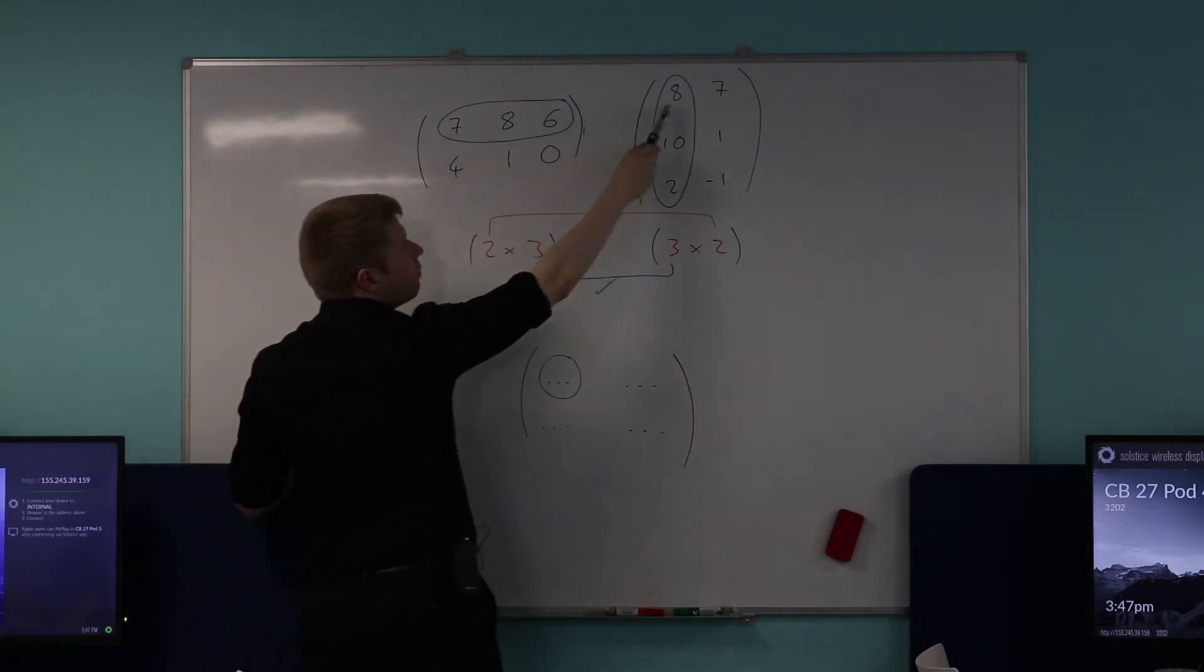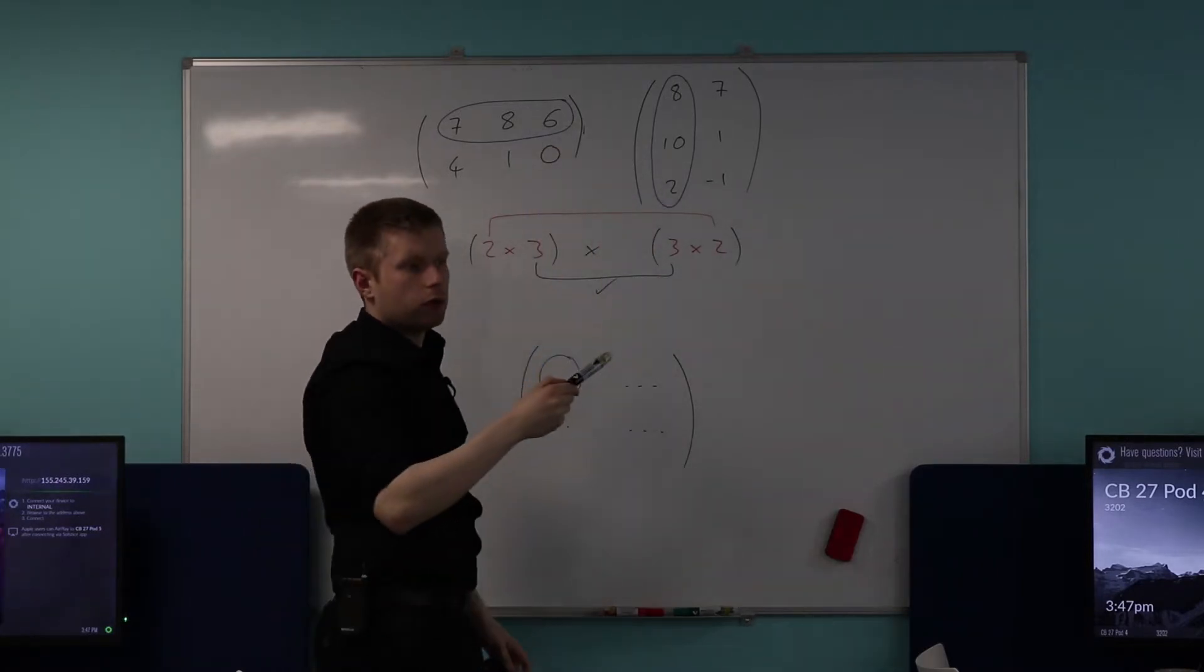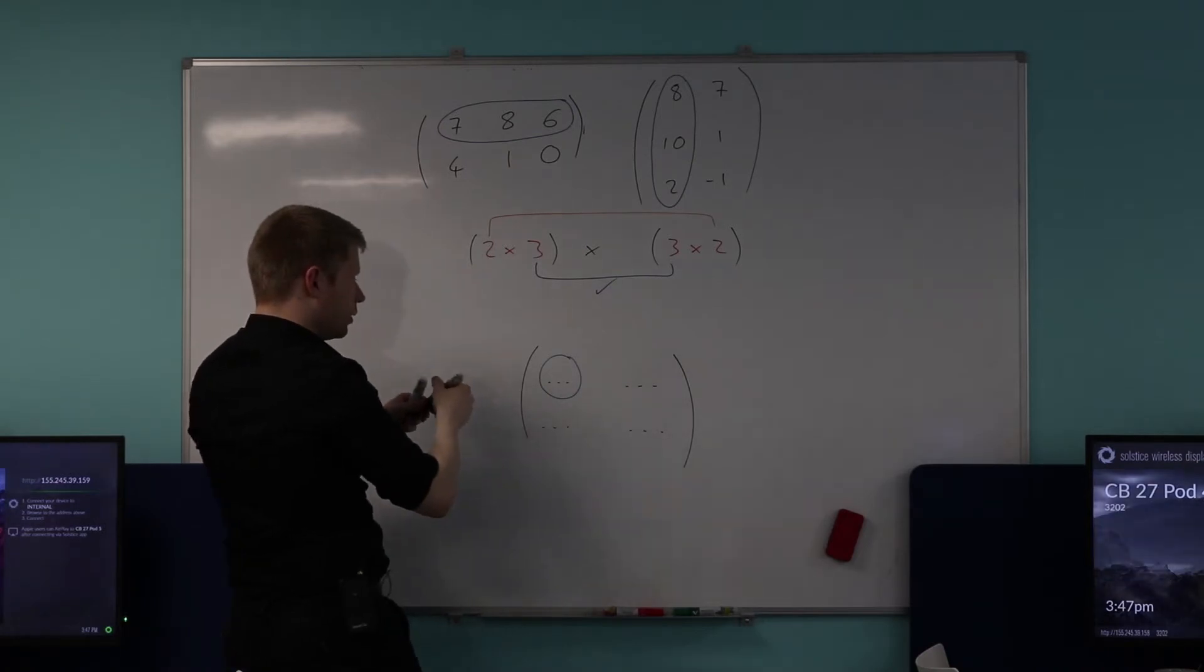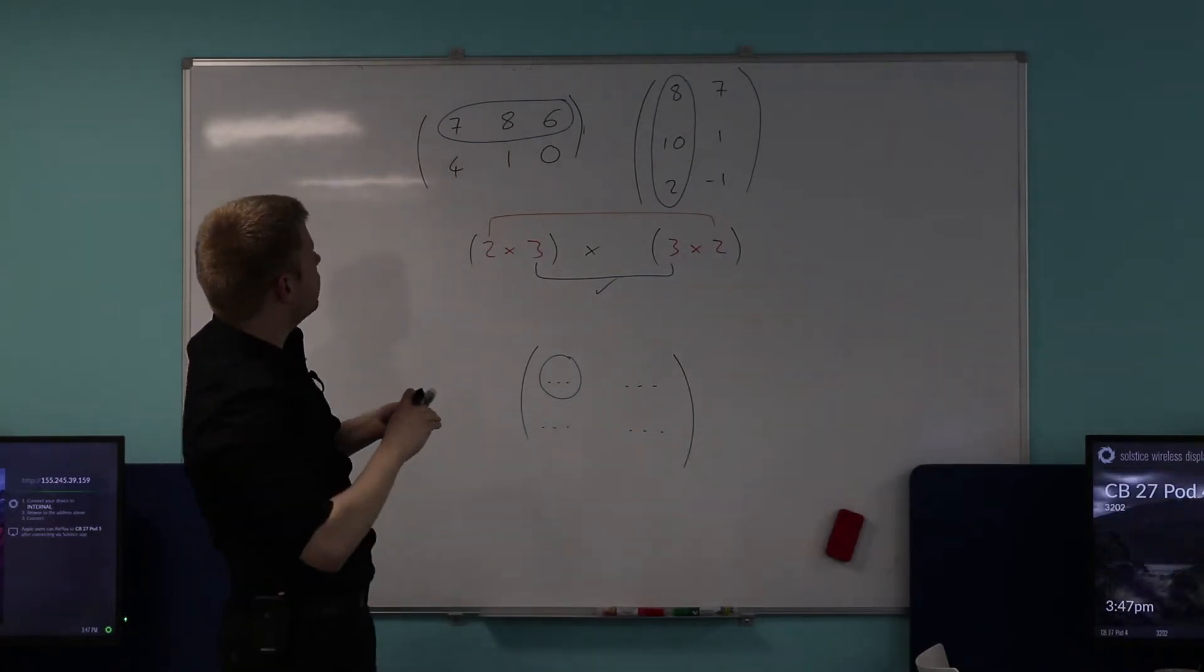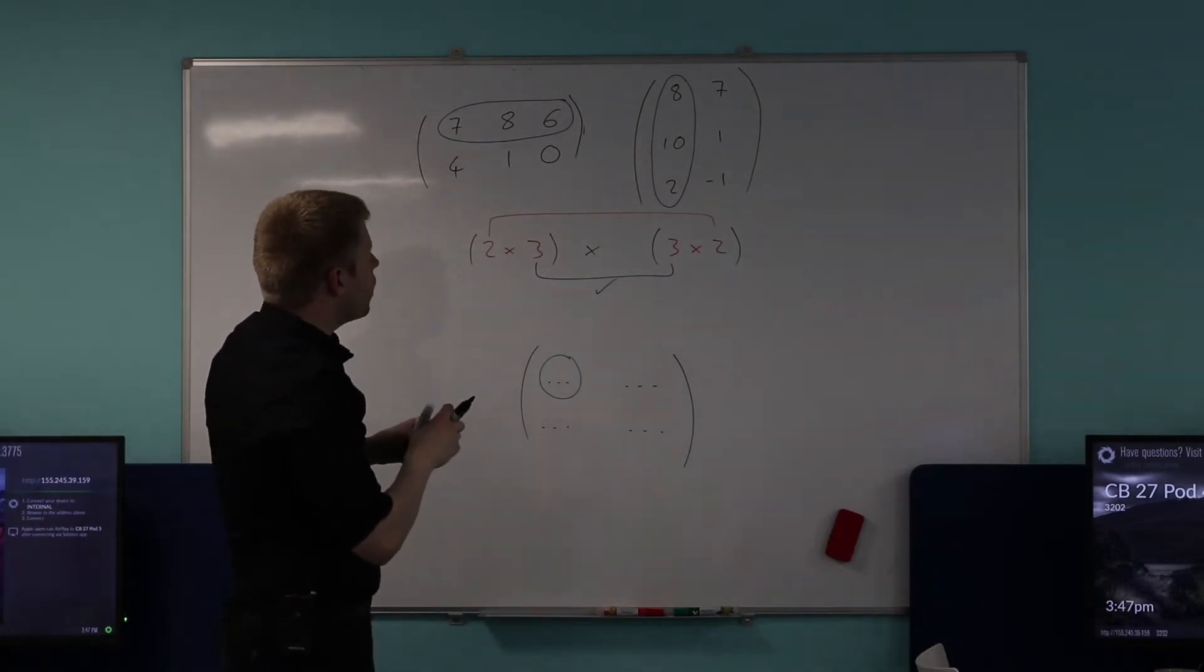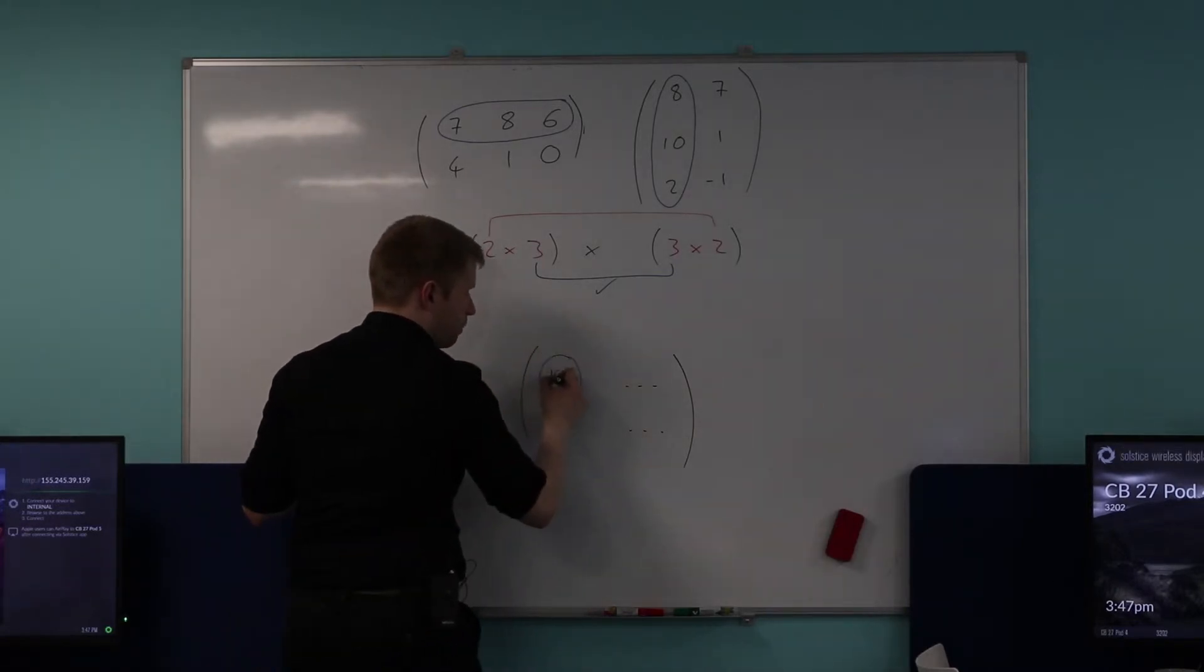And then I'd multiply corresponding elements together and add them. So I'd do seven multiplied by eight, added to eight multiplied by ten, added to six multiplied by two. Do you see that? Okay. Has somebody actually calculated that for me? So seven multiplied by eight is 56, plus 80 is 136, plus 12 is 148. You happy with that?